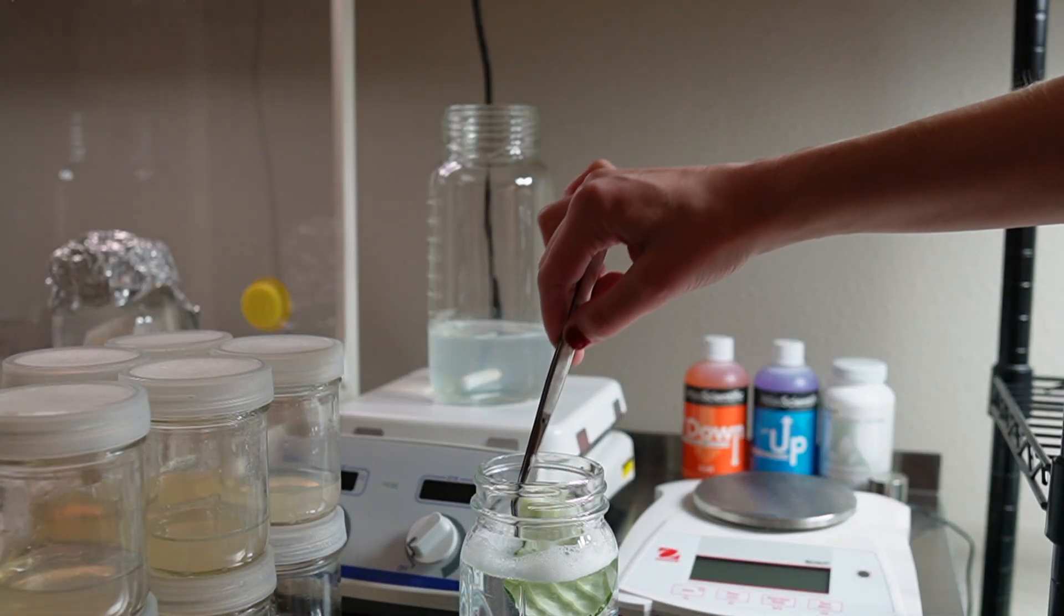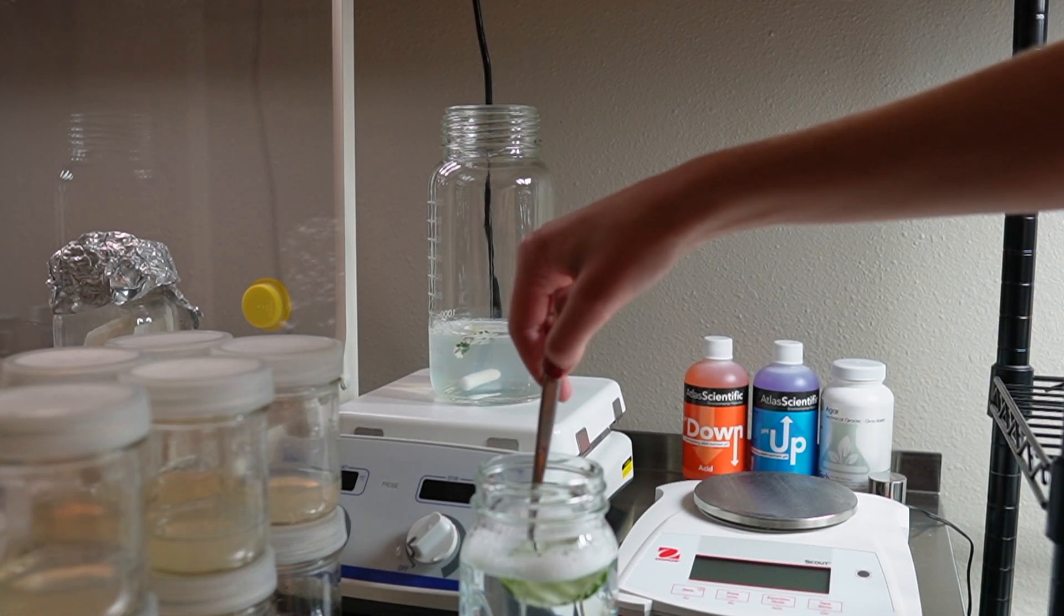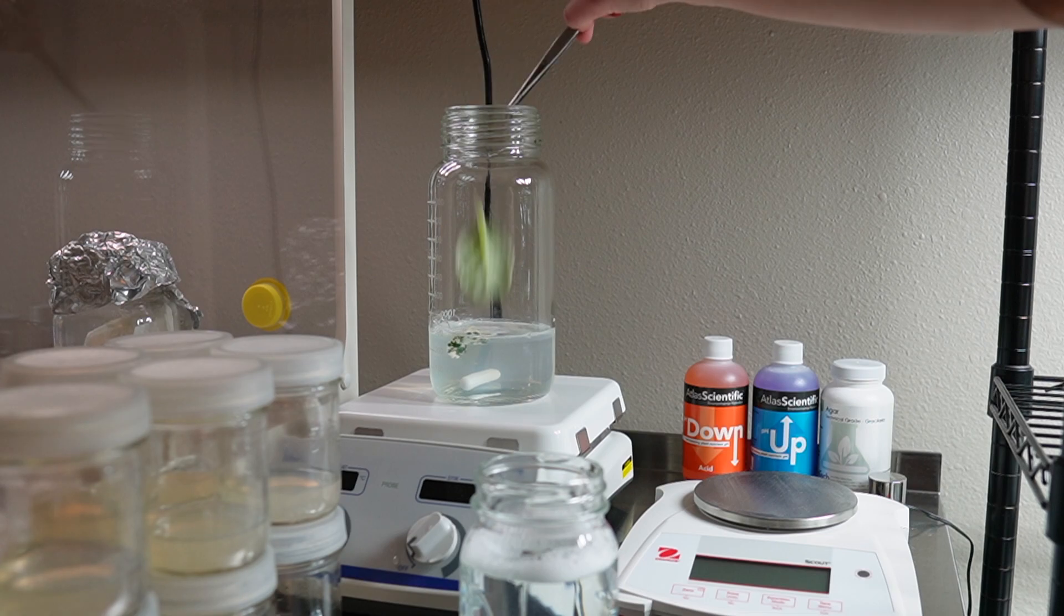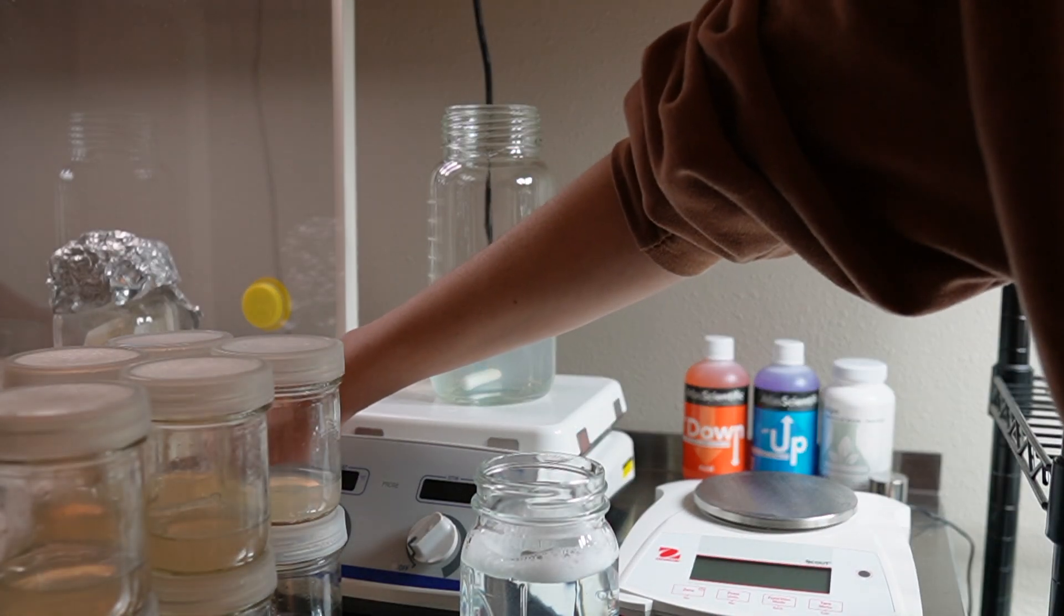You'll see that I'm using a magnetic stirrer to agitate the African violet leaves in the bleach solution. If you don't have one of these, you can just do this by hand. It works exactly the same.